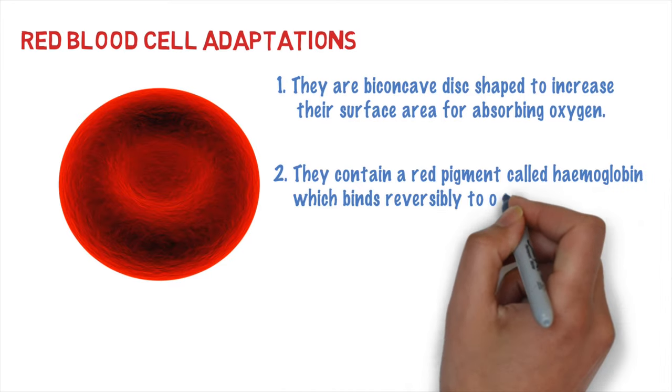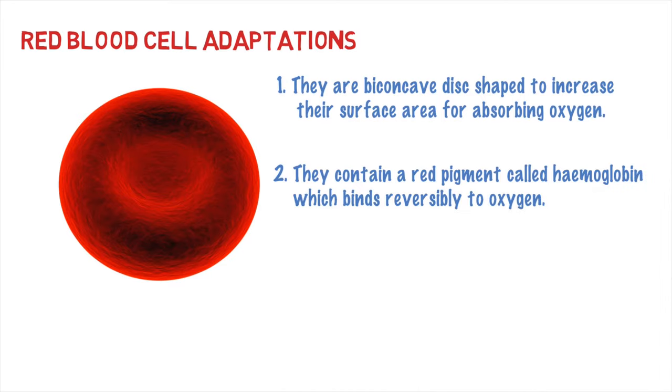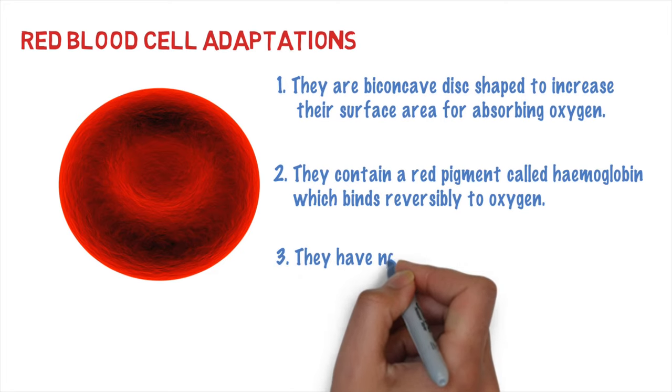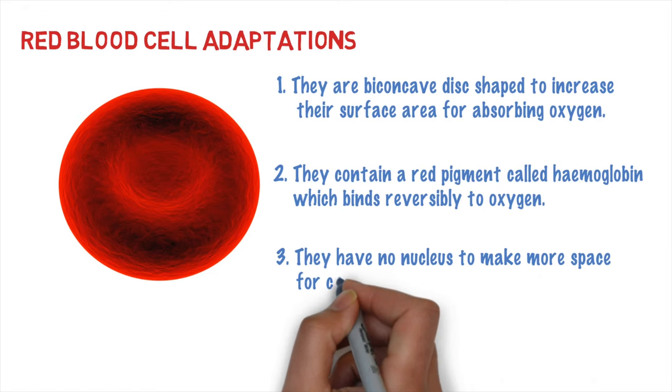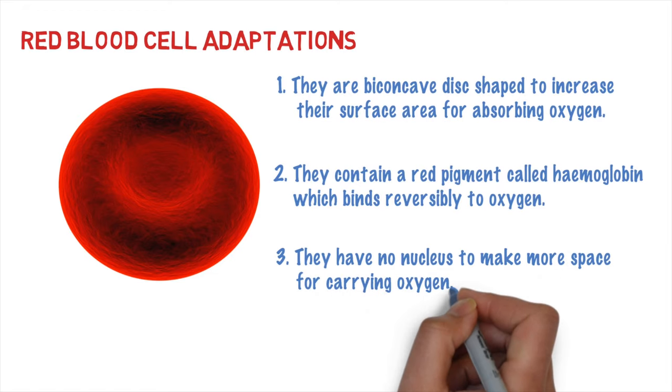So as the blood travels around the body, it drops it off. They also are one of the cells that have no nucleus, and the idea of this is it gives it more space for carrying oxygen, so more space for haemoglobin.